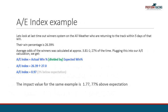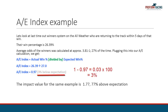Let's look at last start winners on turf who are returning to the track within 5 days of that win. Their win percentage is 26.39%. The average odds of the winners was calculated at approximately 3.81 to 1, 27% of the time. Plugging this into our AE calculation, we get an AE Index of 0.97, which is 3% below expectation.